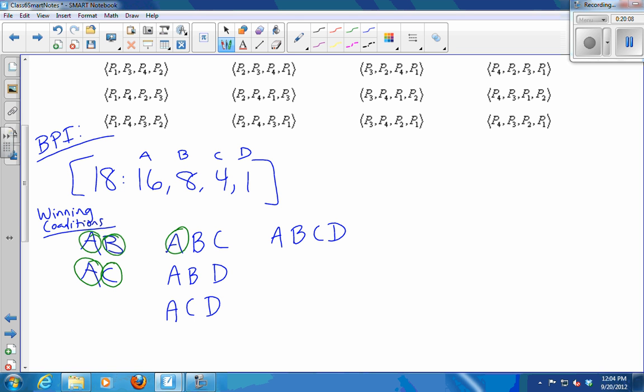In A, B, D, A can't leave because 8 and 1 is not enough, so A is critical. Can B leave? No, because 16 and 1 is not enough, so B is critical. B can't leave, it's critical. D can leave because 16 and 8 is enough. How about for A, C, D? Can A leave? No. Can C leave? No. Can D leave? Yeah. In A, B, C, D, can A leave? No. Can B leave? Yeah, A, C, and D left still have 21. Can C leave? Yeah. Can D leave? Yeah. So those are all the critical counts.